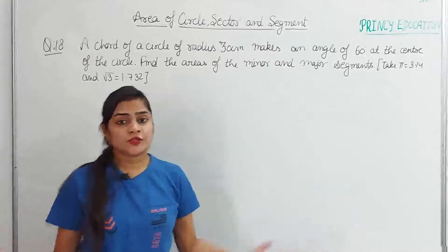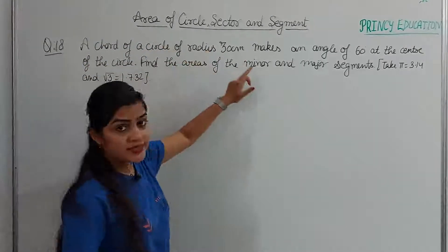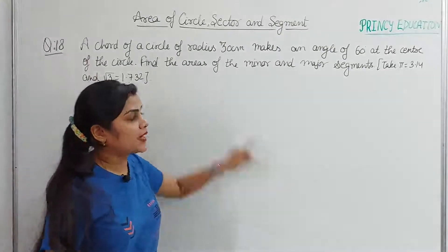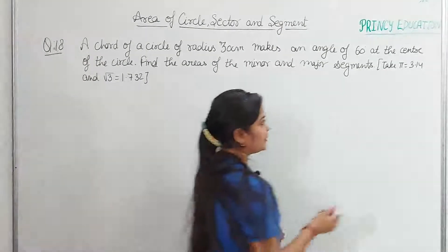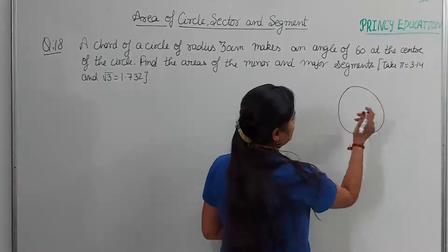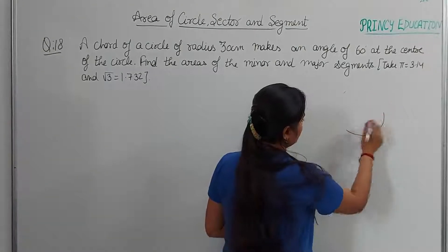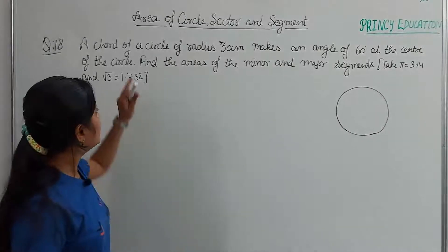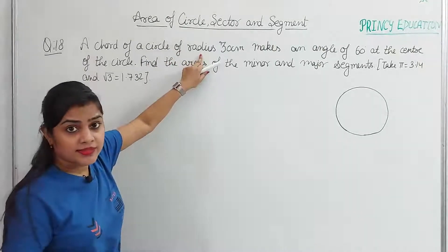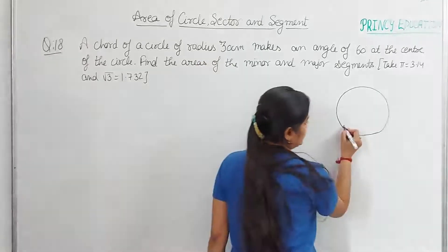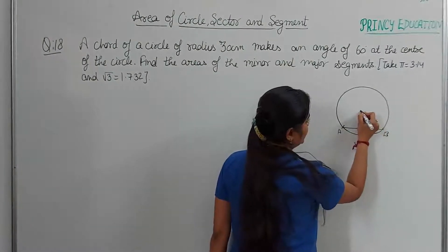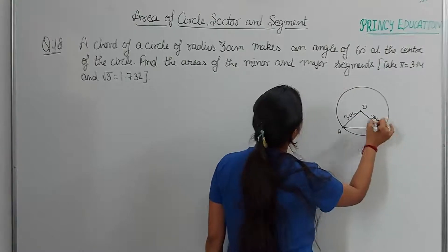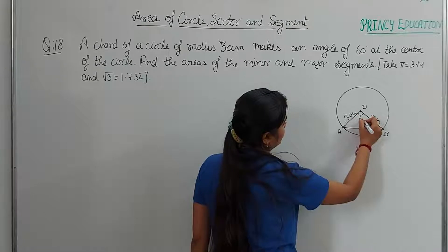Now let's take up question number 18. A chord of a circle of radius 30 cm makes an angle of 60 degrees at the center of the circle. Find the areas of the minor and major segments. First draw a diagram — the circle has radius 30 cm on both sides, and the chord makes a 60-degree angle at the center.